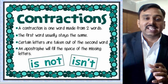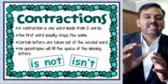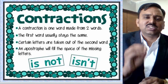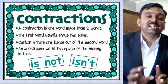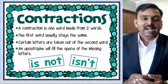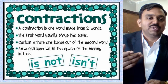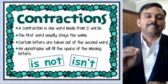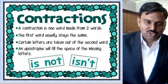The second word is changed — certain letters are taken out. There is no specific rule; sometimes we remove the beginning letters, sometimes the middle letters. Wherever we remove a letter, an apostrophe fills the space of the missing letter.